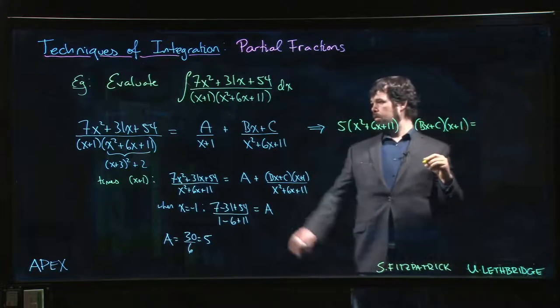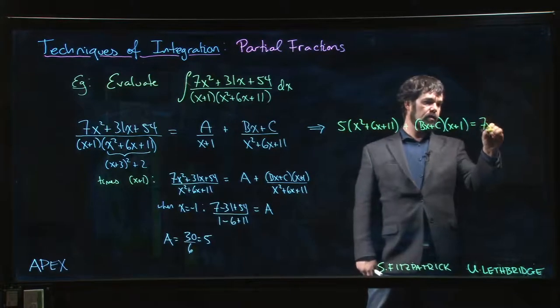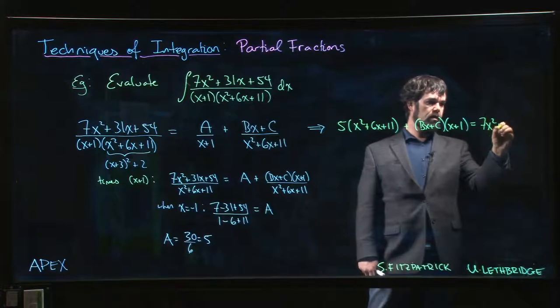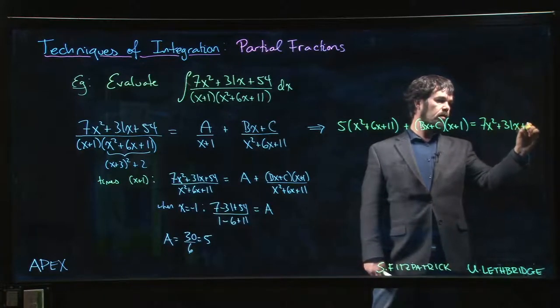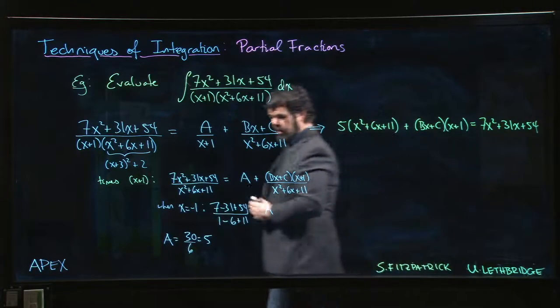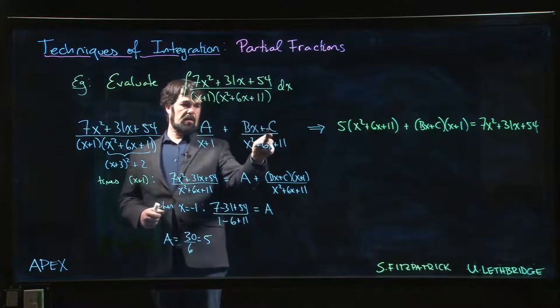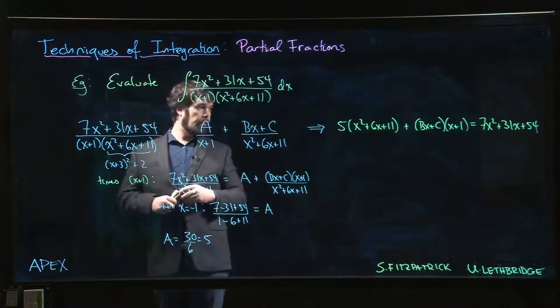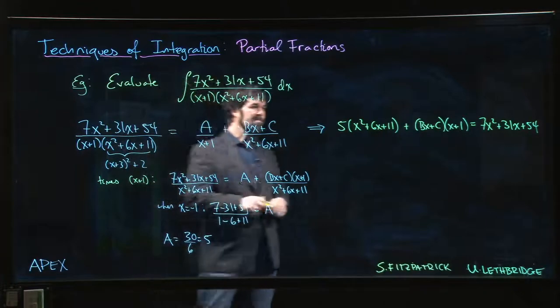So I get 5 times x squared plus 6x plus 11 plus Bx plus C times x plus 1. Well, that has to equal the numerator on the other side: 7x squared plus 31x plus 54. So what I've done here is I've put in my value that I found, A is equal to 5. I cross-multiply to get the common denominator, and then I equated the two numerators.